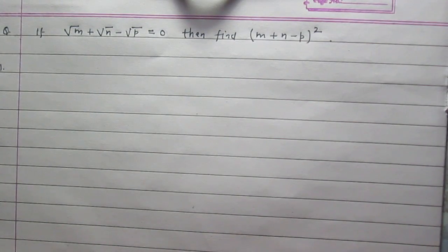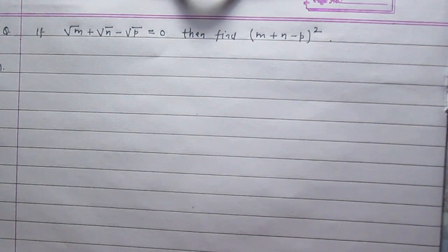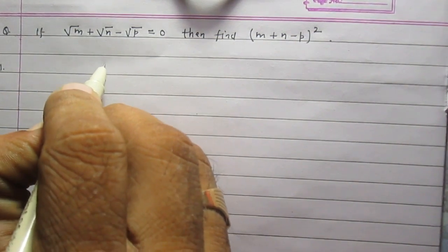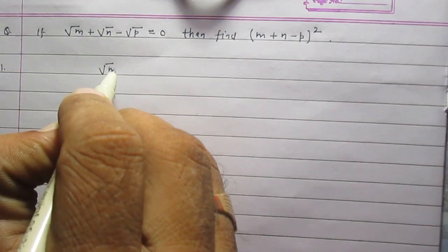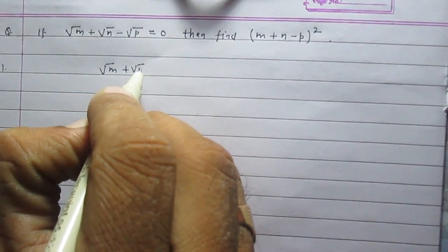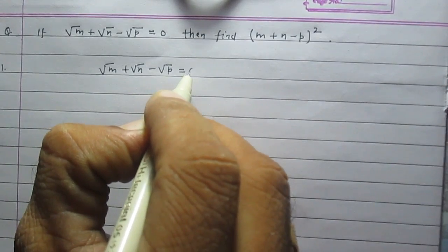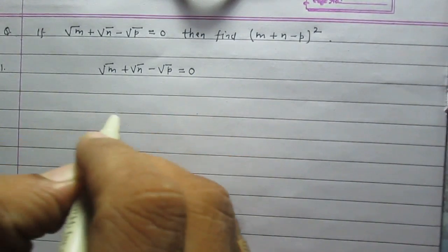If square root of m plus square root of n minus square root of p is equal to 0, then find m plus n minus p whole square. Let us consider square root of m plus square root of n minus square root of p is equal to 0. It is given to us.